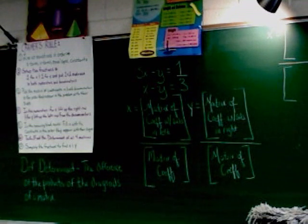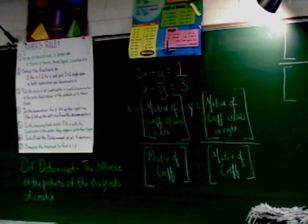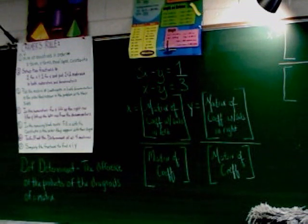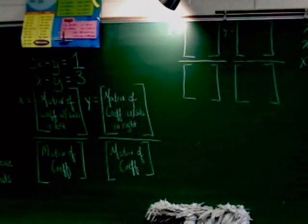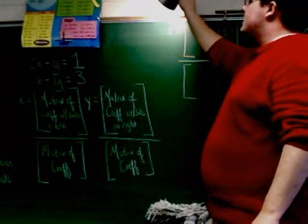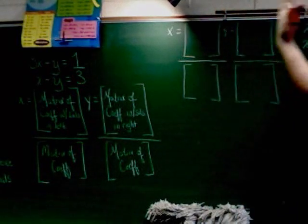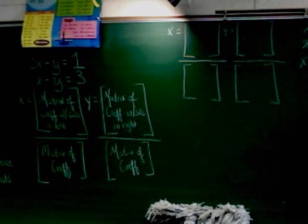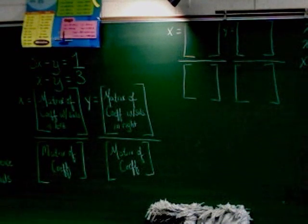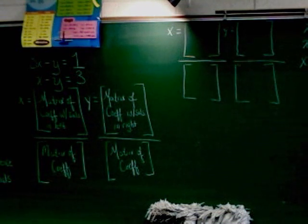Let's look at the first example: three x minus y equals one, and x minus y equals three. Step one says to line up the equations in order — x's, y's, equal signs, constants. As you can see, they're already arranged that way. X is first, then the y, then the equal signs, then the constants. So step one is not a big concern here.